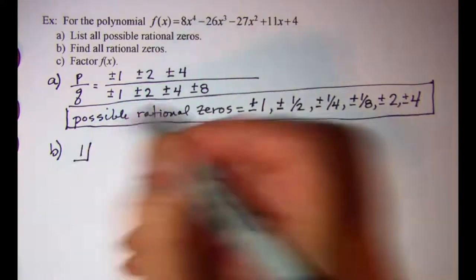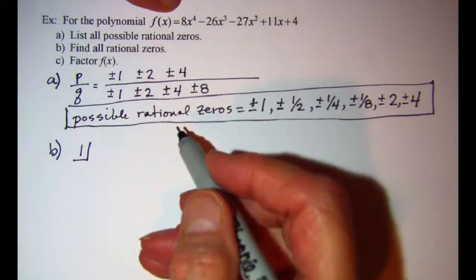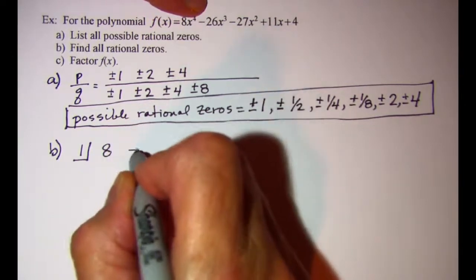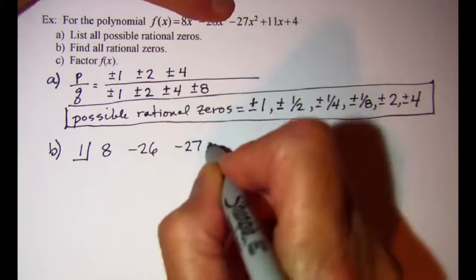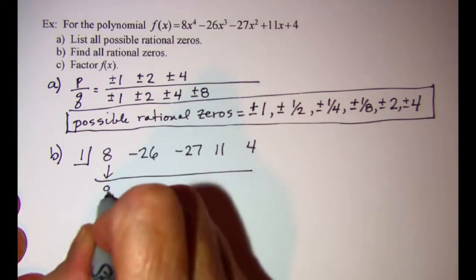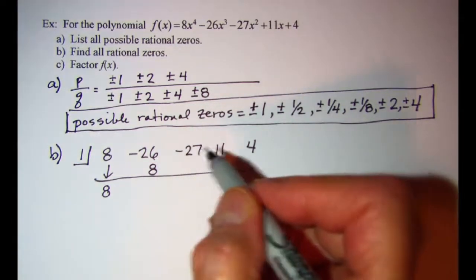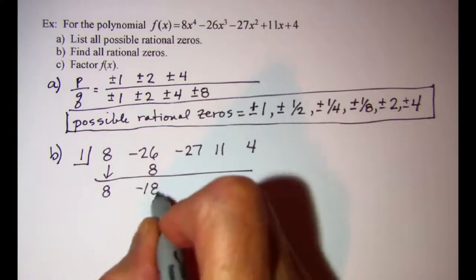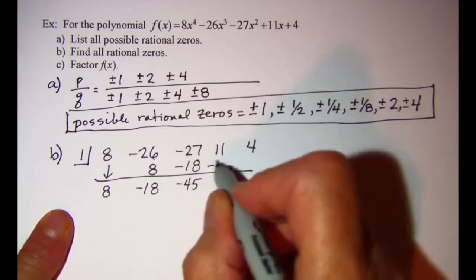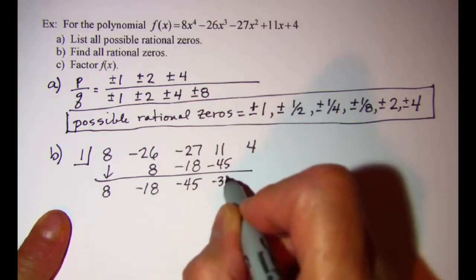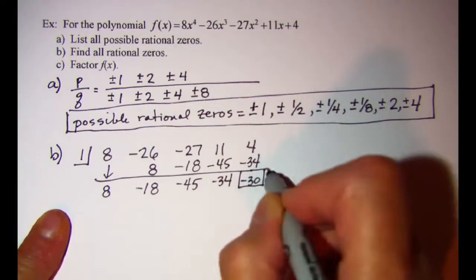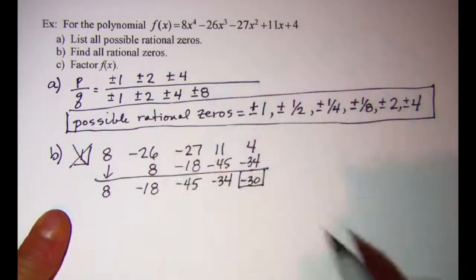Let me try k = 1. I'll list my coefficients making sure nothing is missing: 8, -26, -27, 11, and 4. Bringing down the 8, then 8 times 1 is 8, giving -18; continuing through gives -45, then -34, and a remainder of -30. So 1 is not a zero.